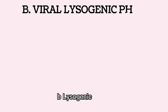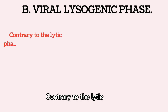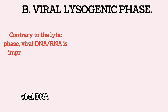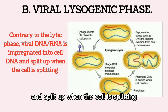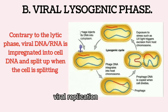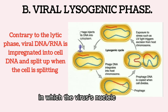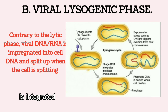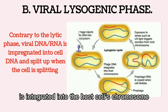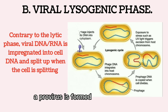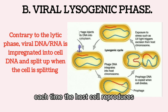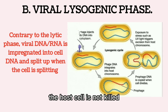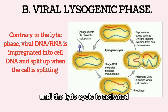Lysogenic phase: Contrary to the lytic phase, viral DNA or RNA is integrated into the cell DNA and is split up when the cell divides. This is a viral replication cycle in which the virus's nucleic acid is integrated into the host cell's chromosome, forming a provirus that is replicated each time the host cell reproduces. The host cell is not killed until the lytic cycle is activated.